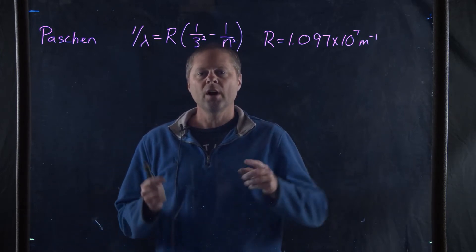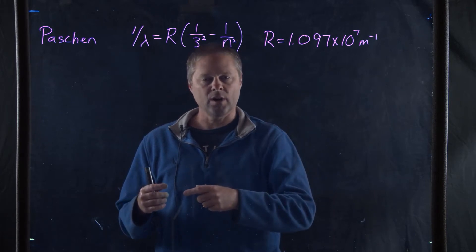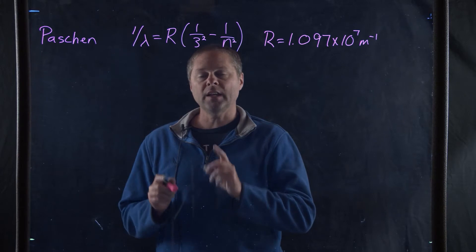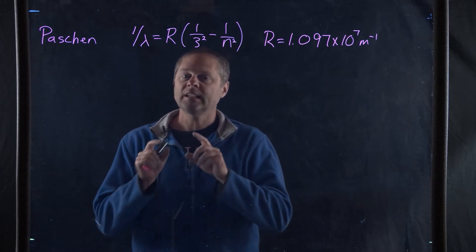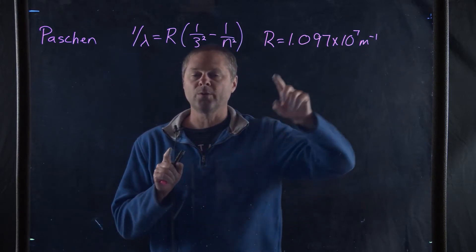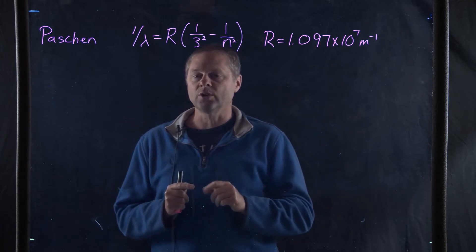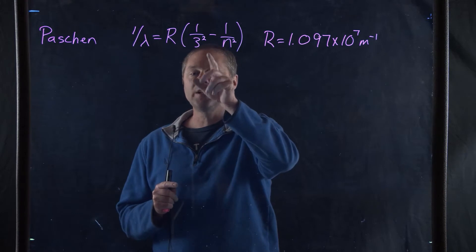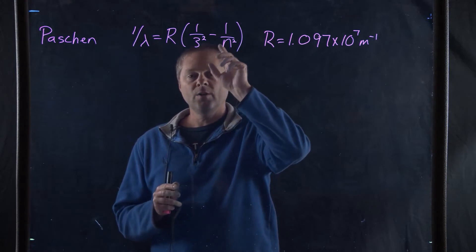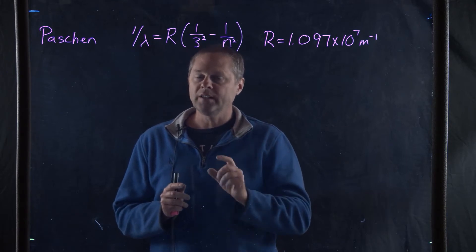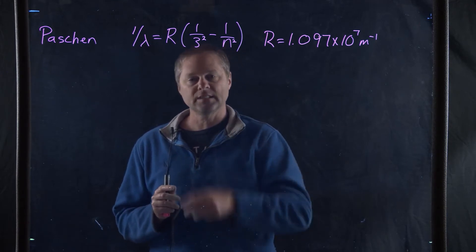In the Balmer series we went down to the second orbital. Here we're only going down to the third orbital. Now the interesting thing is that as you start with the nucleus and go further away, those orbitals actually get closer and closer together. So the distance between the fourth and third orbital is smaller than the distance between the third and second orbital.